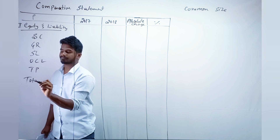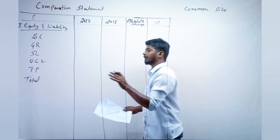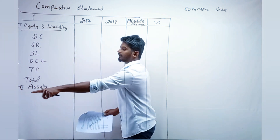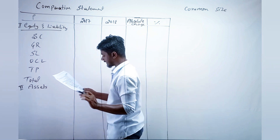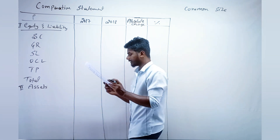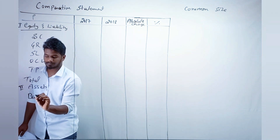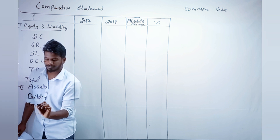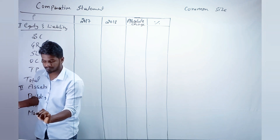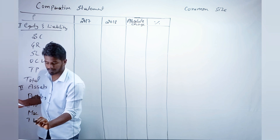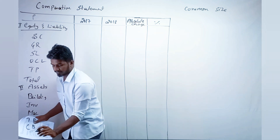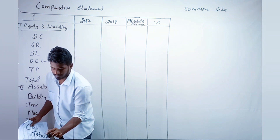Next, write the second section: Assets. The assets given are buildings, inventory, machinery, trade receivable, and cash at bank. Write them down — buildings, inventory, machinery (Mac), trade receivable (TR), cash at bank (CB) — and make a total for the assets section as well.